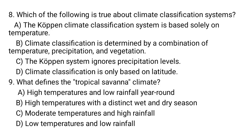The Köppen climate classification system is based not only on temperature but also on precipitation, vegetation, and other factors. So A is not correct. B — climate classification determined by a combination of temperature, precipitation, and vegetation — is the correct answer. The Köppen system does not ignore precipitation; it supports it. Climate classification is not based only on latitude — there are different factors used.